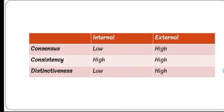If consistency is high, consensus is low, and distinctiveness is low, then we attribute the behavior to the person's internal characteristics. If we are talking about an external attribution, then all three — consensus, consistency, and distinctiveness — should be high. When everyone around behaves the same way, it means some external factor is provoking that behavior, so it is not an internal characteristic.